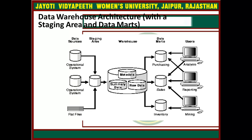This figure illustrates five things. First, data stores — that is operational systems and flat files. Second, staging area — where data sources go before the warehouse. Third, warehouse — containing metadata, summary data, and raw data. Fourth, data marts — covering purchasing, sales, and inventories. Fifth and last is users — analysis, reporting, and mining.